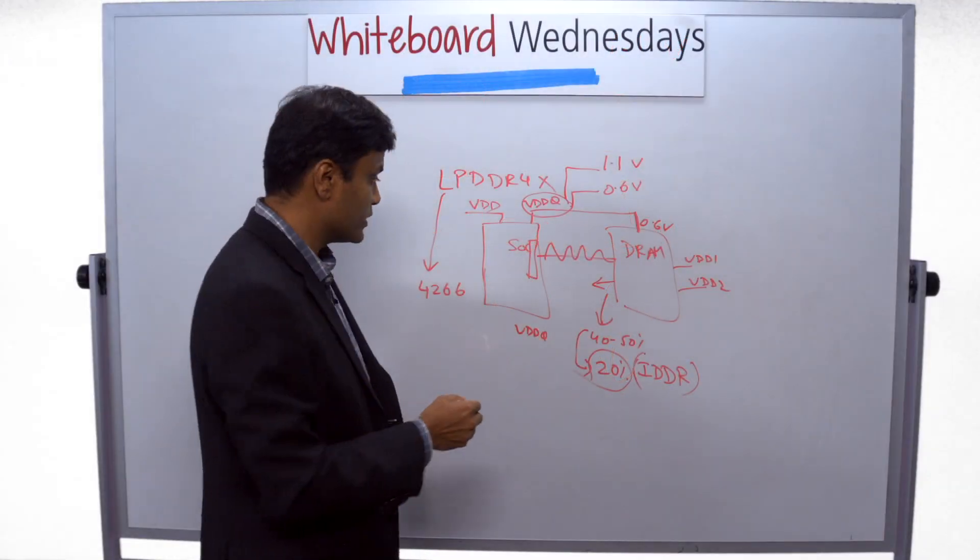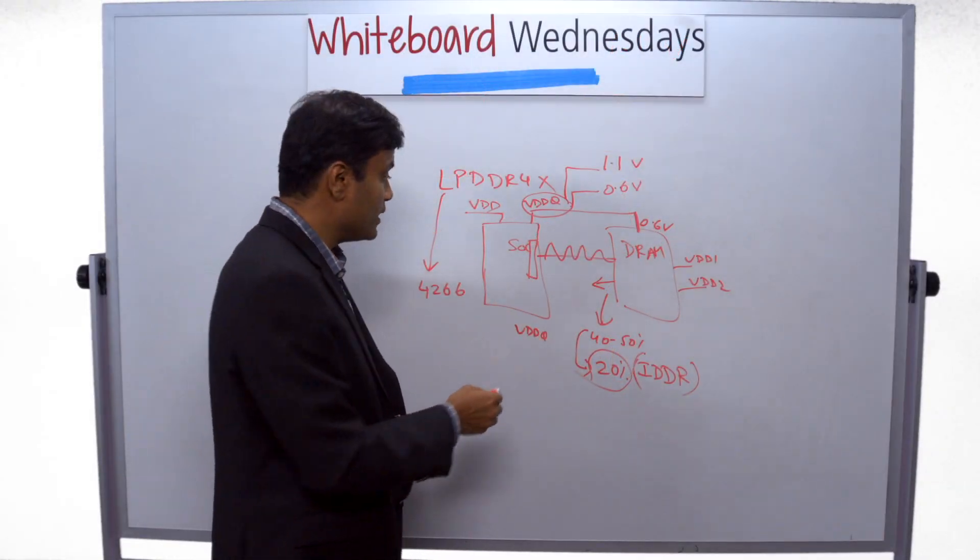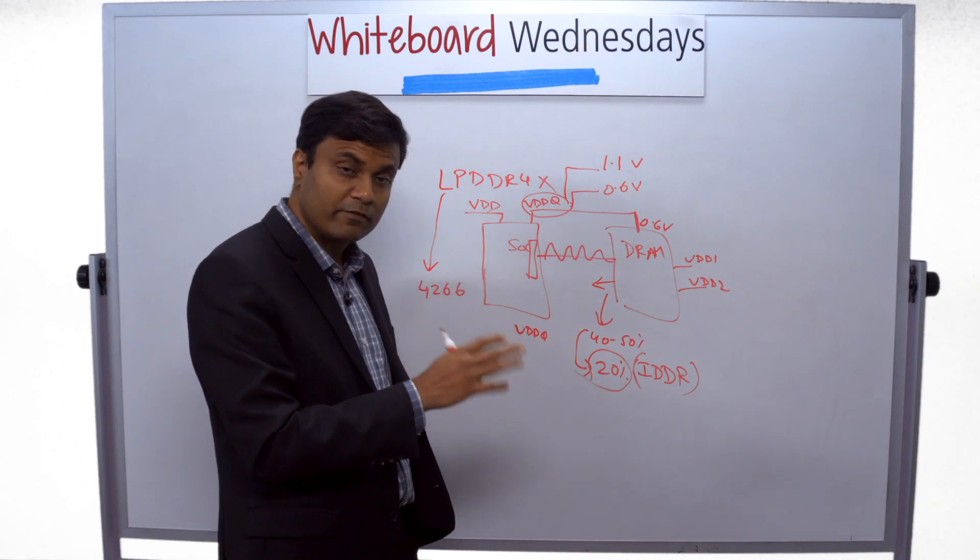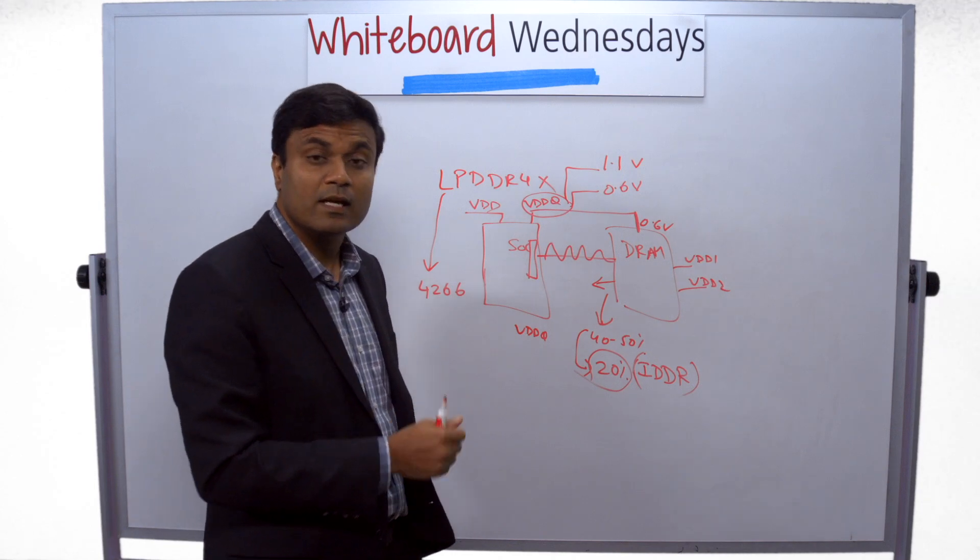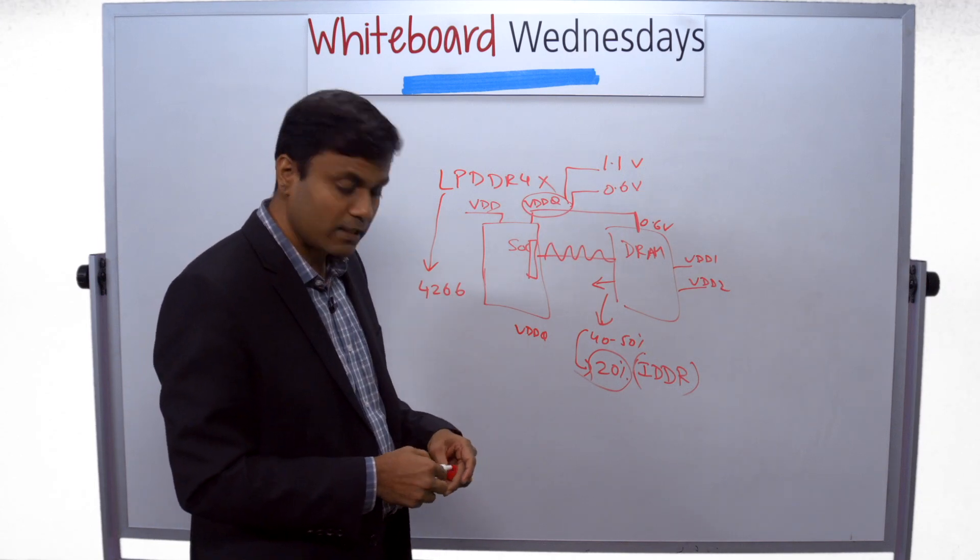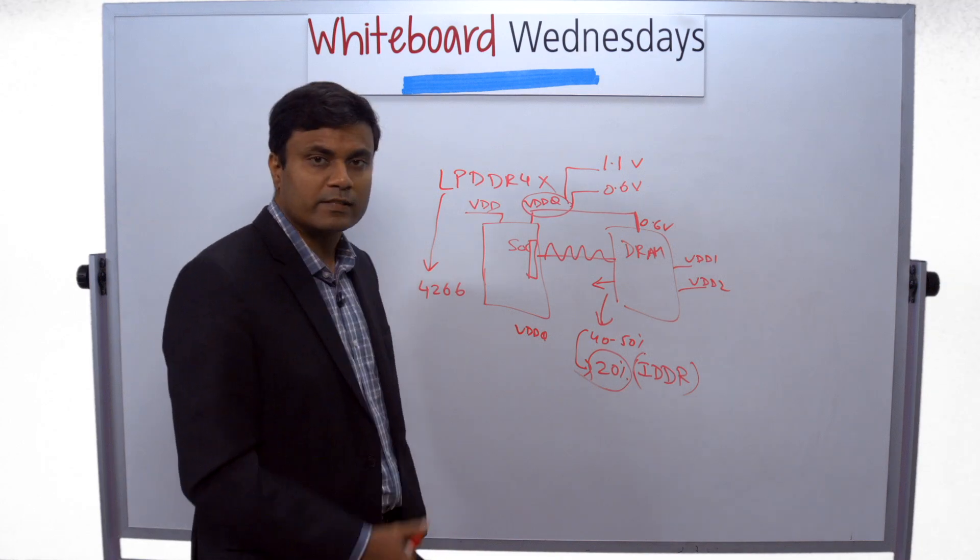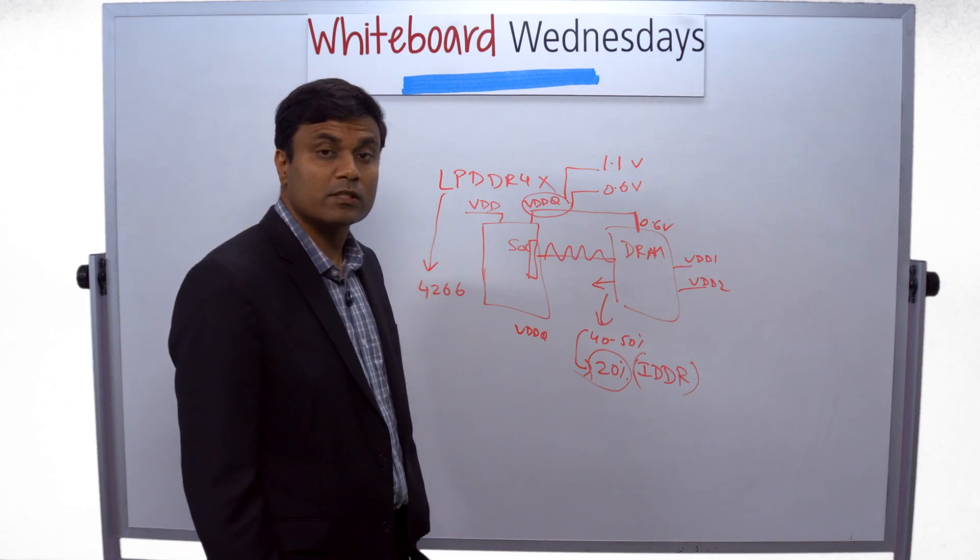And Cadence has IP solutions. If you're building your next SOC chip, we have silicon-proven PHY IP, controller IP, a subsystem verified for LPDDR4X, available in the leading nodes like 16, 12 nanometer, and 7 nanometer, and ready for your design. Thanks for watching. Watch this space for more.